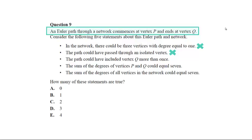The fourth statement: the sum of the degrees of vertices P and Q could equal 7. Now we don't know the degree of P and Q, but we do know they have to be odd. If you add any two odd numbers together you will get an even answer. So 7 is an odd number, so that statement cannot be correct.